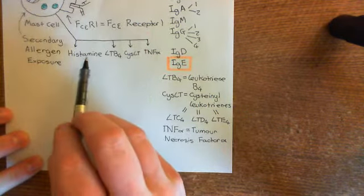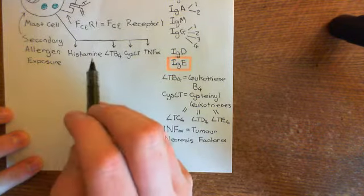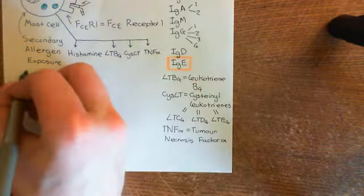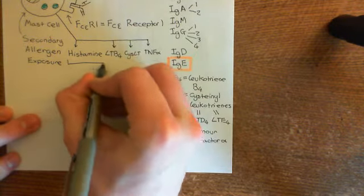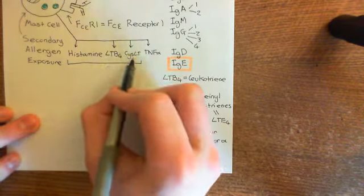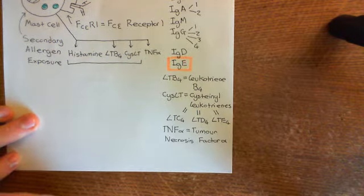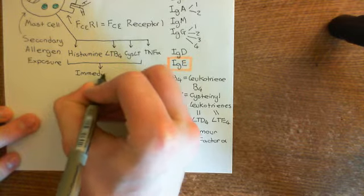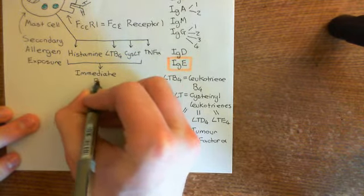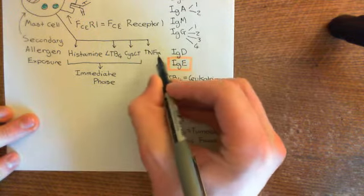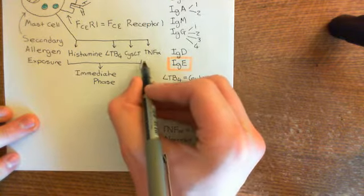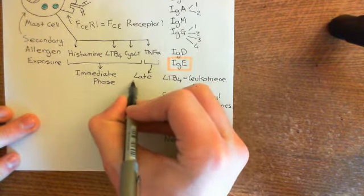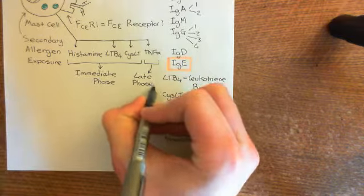These pro-inflammatory mediators trigger the allergic asthmatic attack. The attack can be divided into the immediate phase and the late phase. Histamine, leukotriene B4, and cysteinyl leukotrienes are released very quickly and cause the immediate phase occurring within minutes, whereas tumor necrosis factor alpha is released far later because it has to be synthesized, causing the late phase occurring a few hours after secondary allergen exposure.